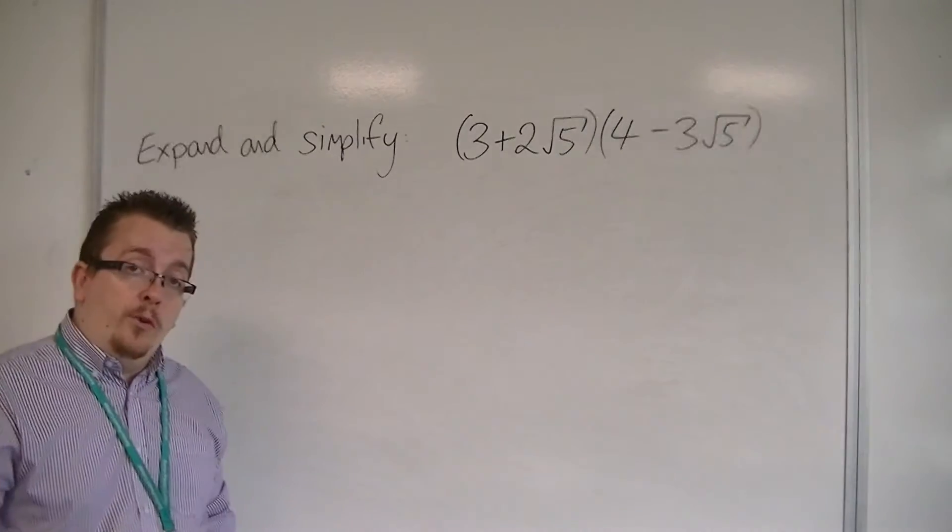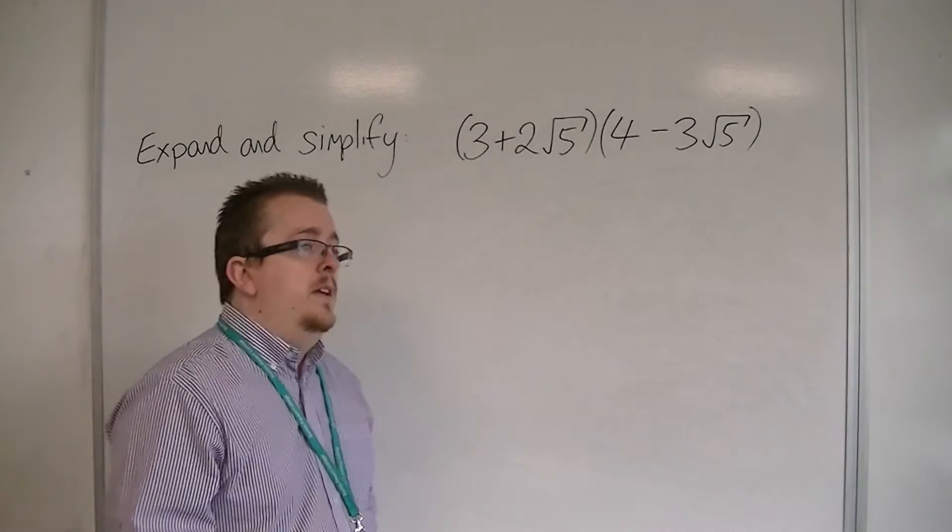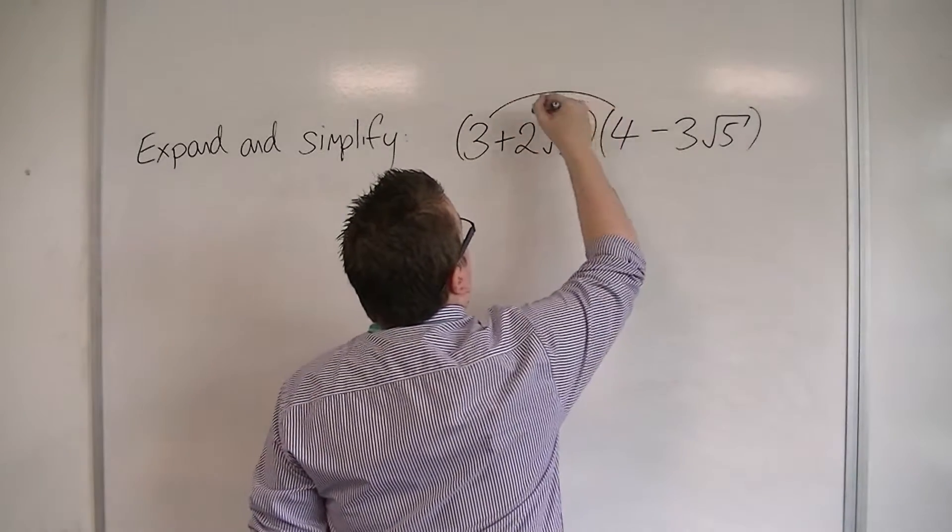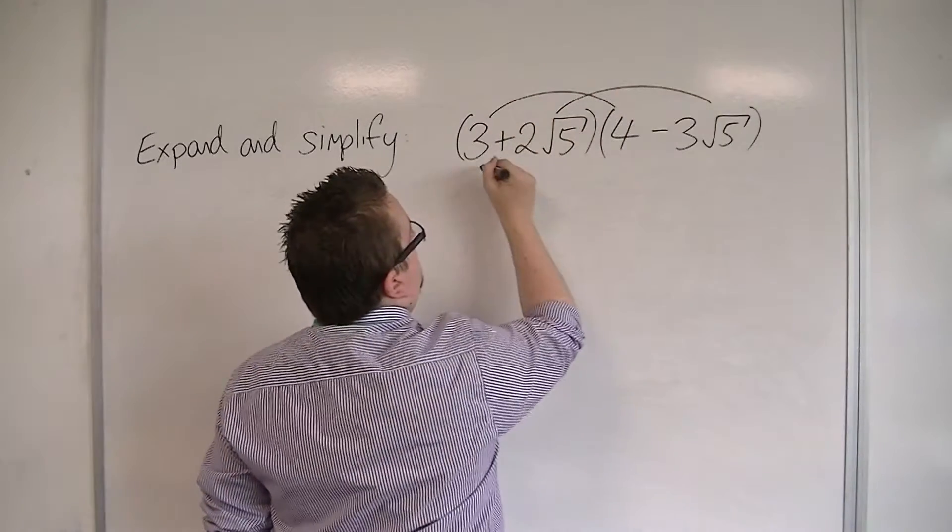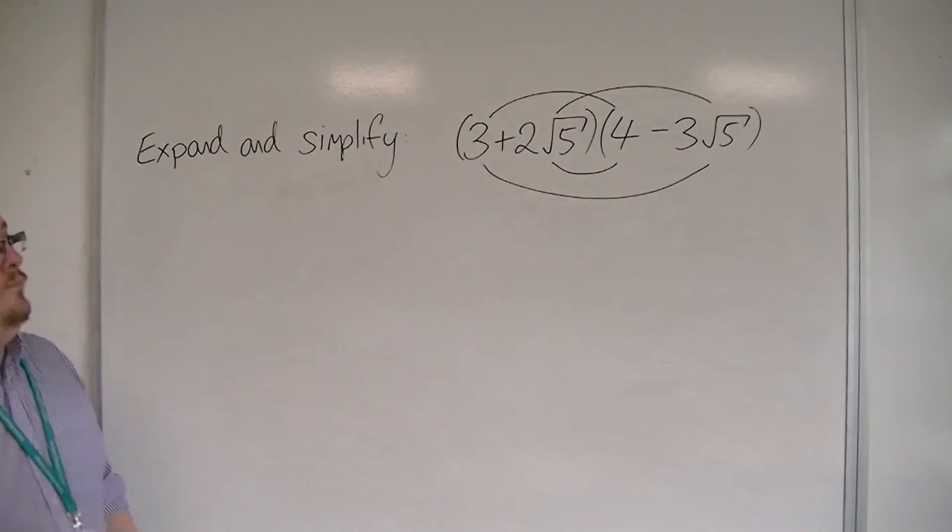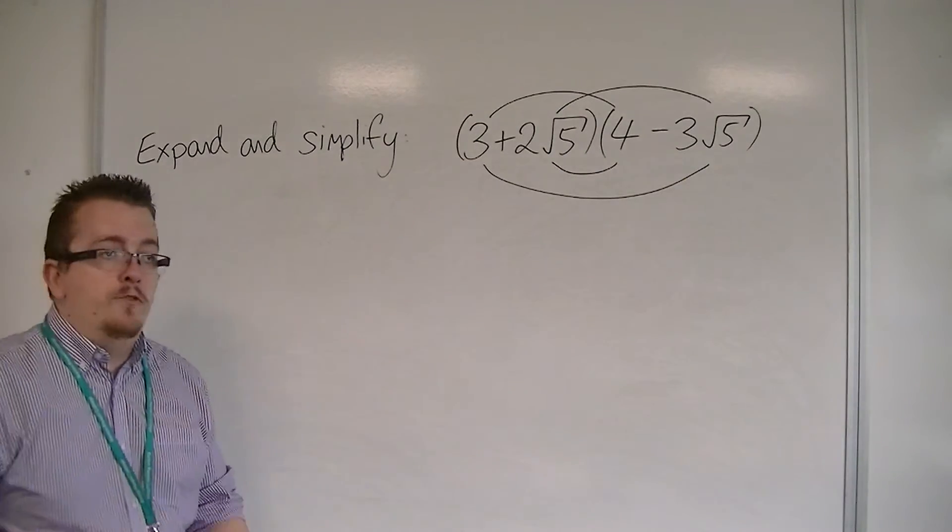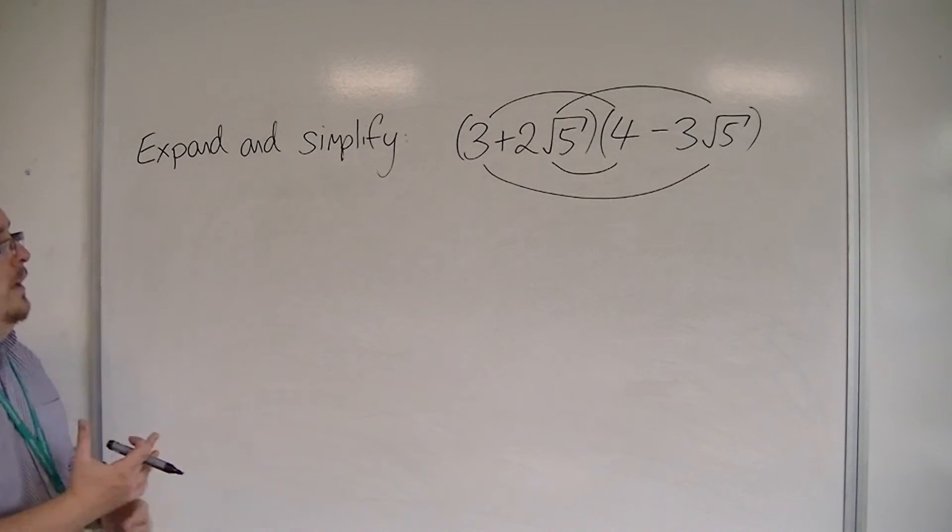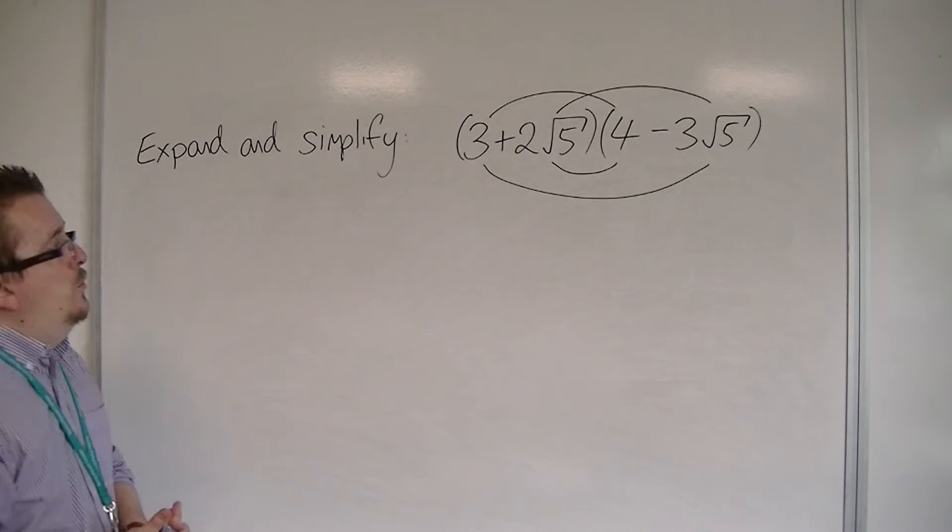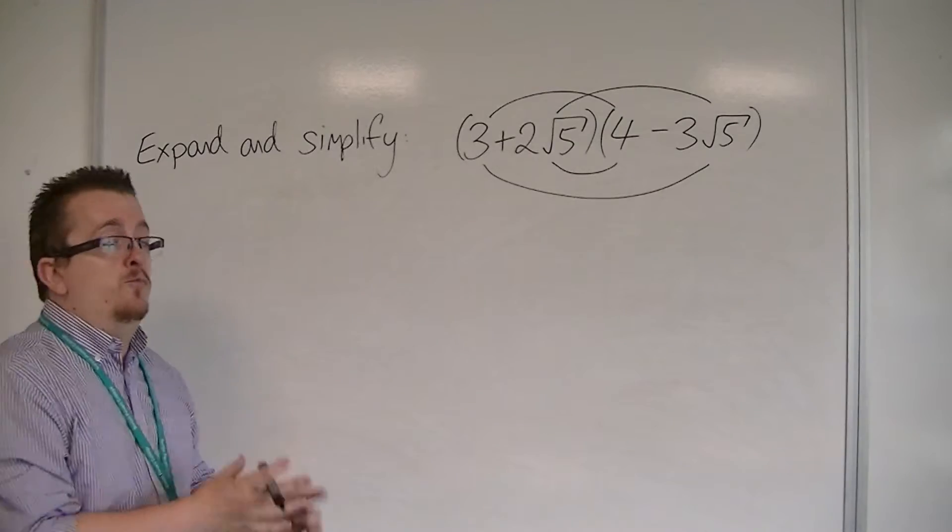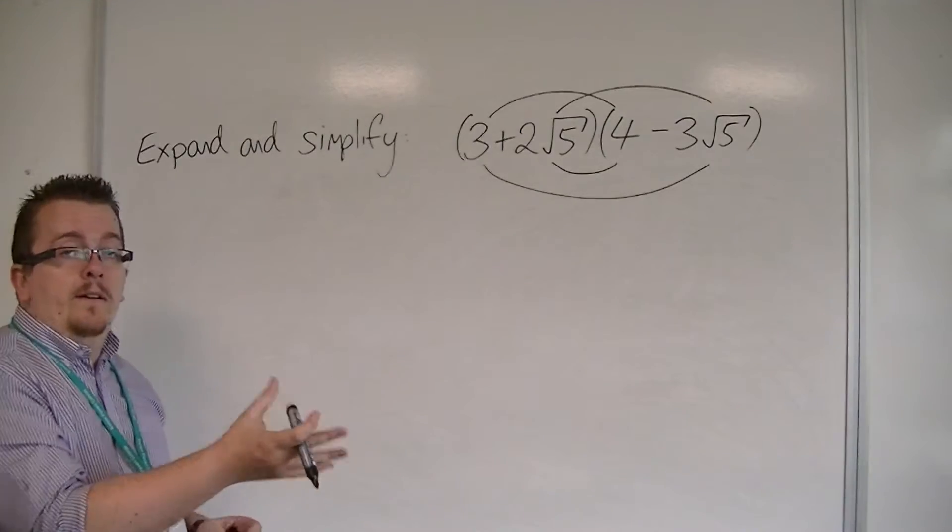Depending on how you were taught, you might use a grid, you might use arrows. The arrows might look different depending on who taught you and how you learnt it. We've got to multiply every term in the first bracket by every term in the second bracket, effectively.